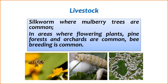In areas characterized by flowering plants, pine forests, and orchards, beekeeping is a common agricultural activity. Bees play a crucial role in pollination, enhancing the productivity of flowering plants and fruit orchards. Beekeeping not only supports the natural ecosystem but also contributes to the production of honey and other bee-related products. These practices showcase the diverse agricultural activities in different regions of Turkey, each adapted to the local environment and resources available.